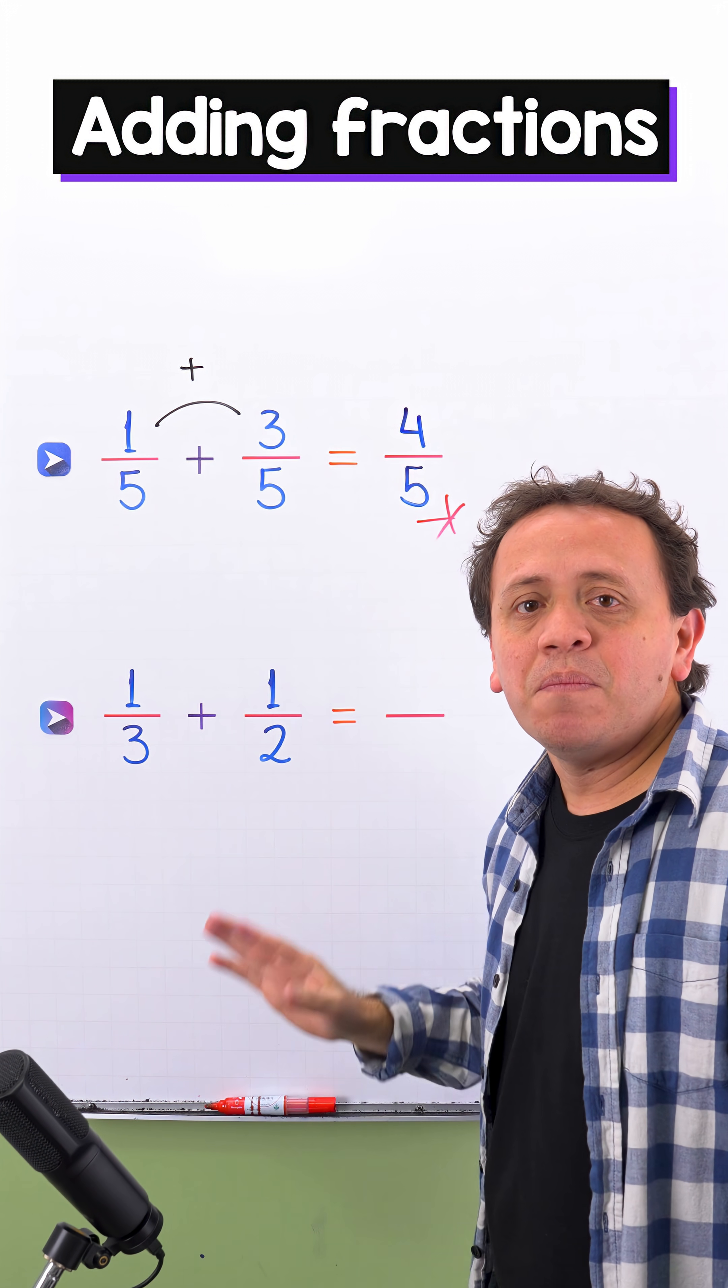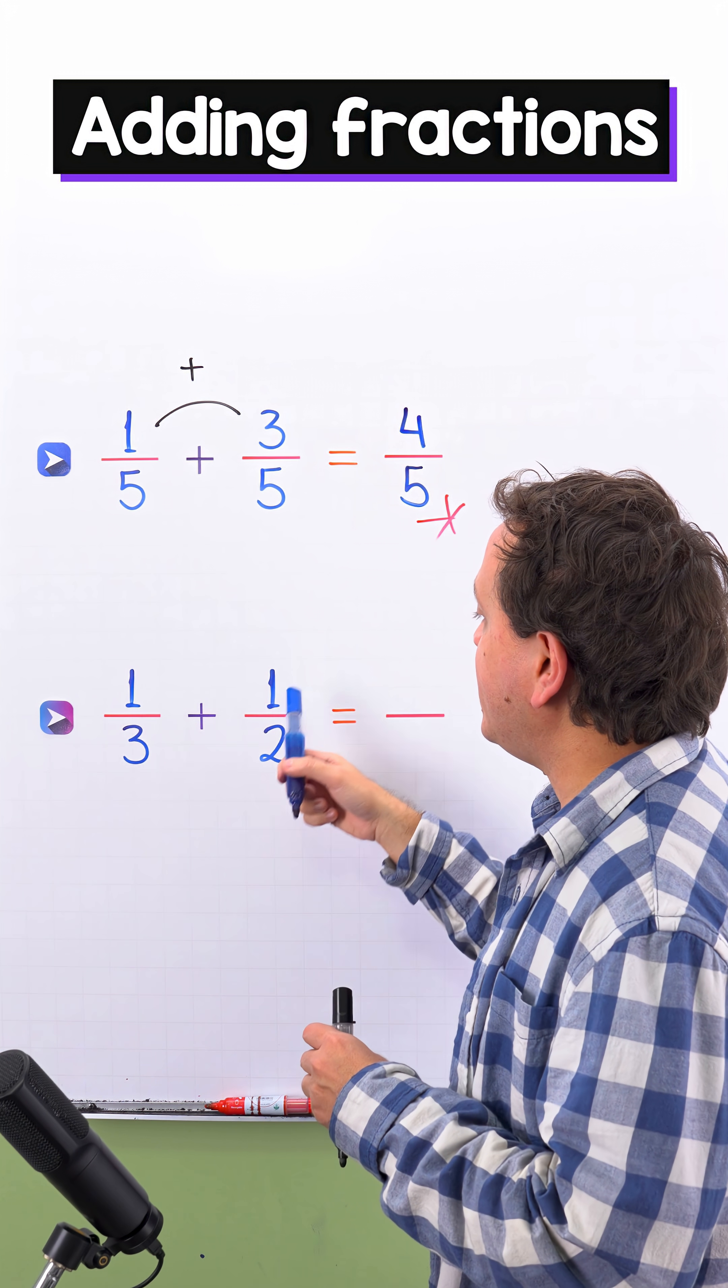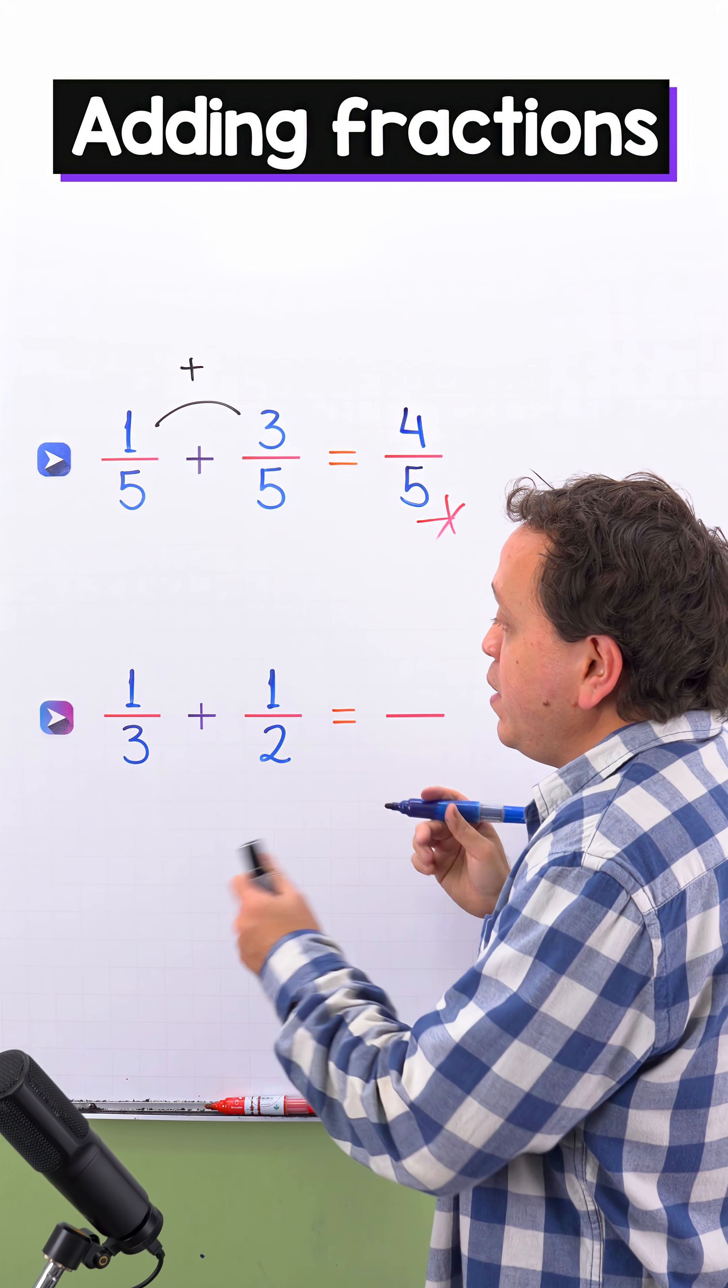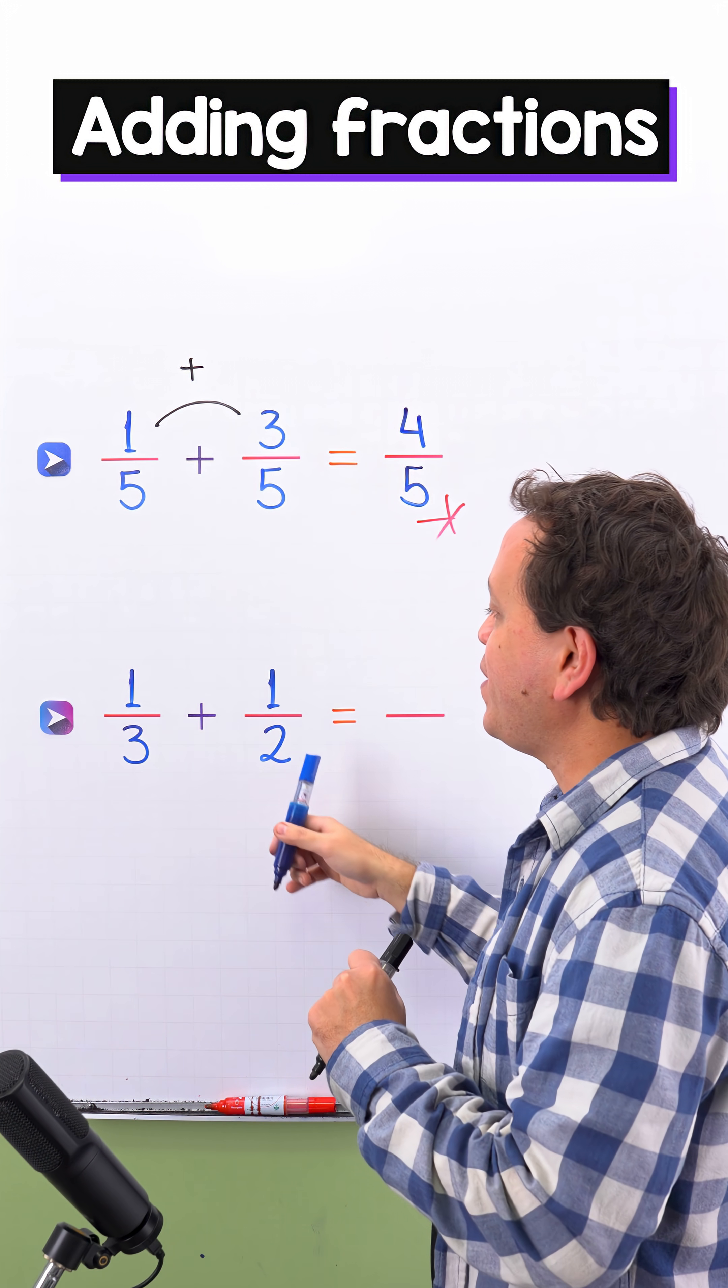In the second example, we need to add one-third plus one-half. These two fractions have different denominators, three on the left and two on the right.